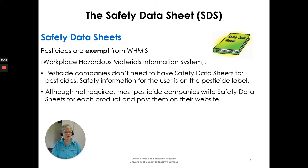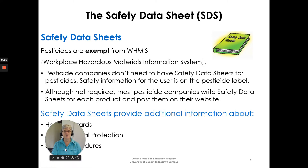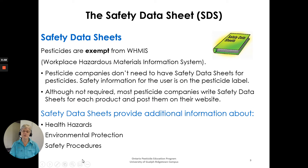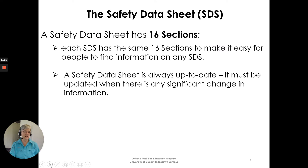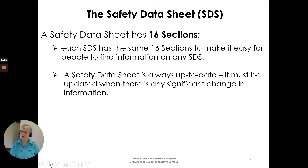Although not required, most pesticide companies do write a Safety Data Sheet for each product, and they will post them on their websites and have them readily available so they're easy to get and refer to. Safety Data Sheets provide additional information about health hazards, environmental protection, and safety procedures. Each Safety Data Sheet has the same 16 sections, which makes it easy to find information on any Safety Data Sheet. The Safety Data Sheet is always up to date and must be updated when there is any significant change in information.